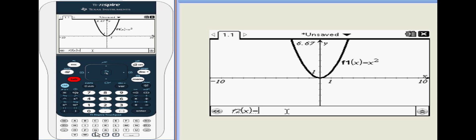To switch back and forth between the graph and the equation input line, we use the tab button.